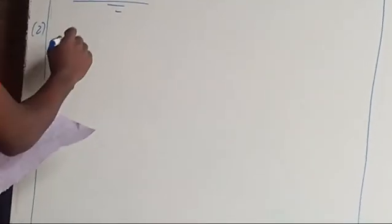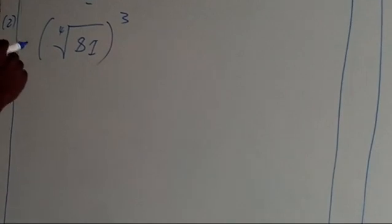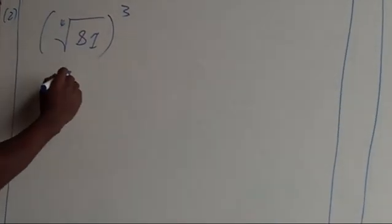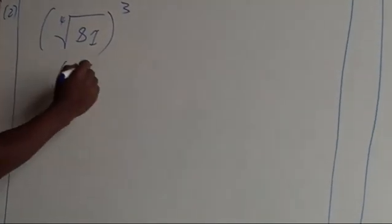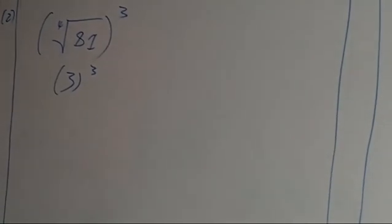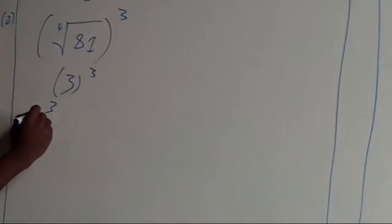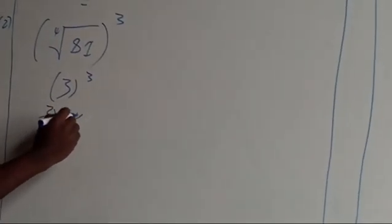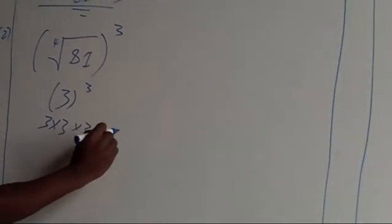Question two reads: evaluate the fourth root of 81 to the power 3. So the fourth root of 81, that's 3, to the power 3. This means 3 × 3 × 3 × 3. The answer is 27.